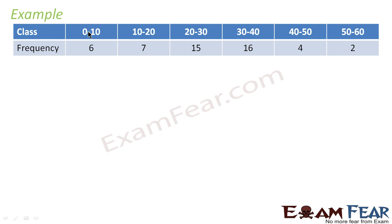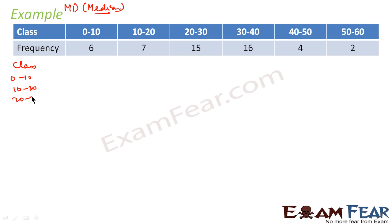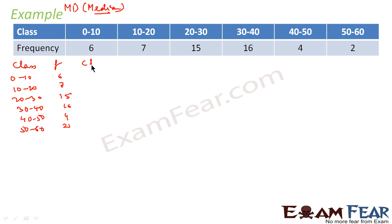Let's take an example. We have classes: 0–10, 10–20, 20–30, 30–40, 40–50, 50–60, with frequencies 6, 7, 15, 16, 4, and 2. We need to find the mean deviation about the median. First, let's write this in table form with the classes and their corresponding frequencies.